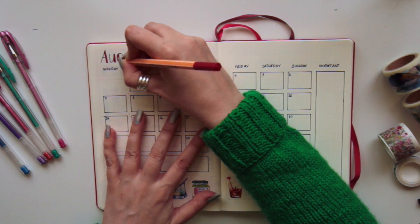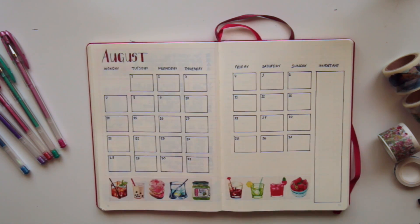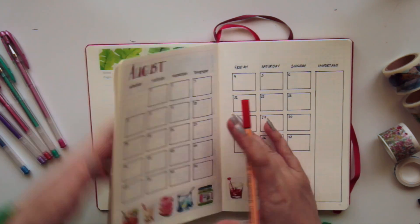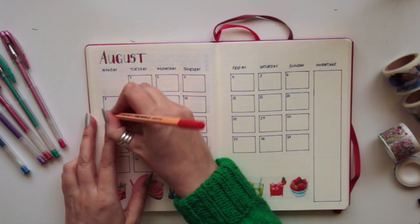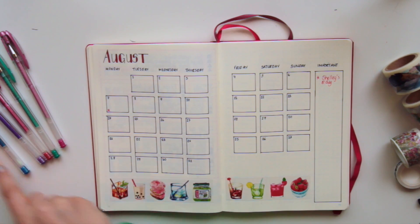Once I use the washi tape, I like to color in the monthly header. I'm using the darkest red I have this month because I think it goes well with all the cocktails I've got down the bottom. Then I go to my future log and just check for any important dates like birthdays which I will add in.